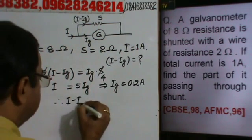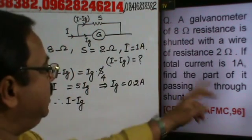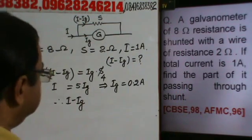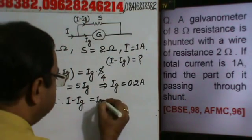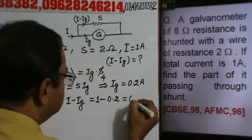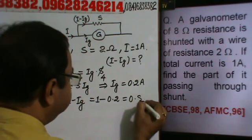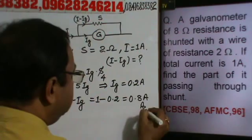Therefore, current will be equal to I minus Ig, part of it passing through the shunt. So this is 1 minus 0.2, which is equal to 0.8 ampere. This is the answer.